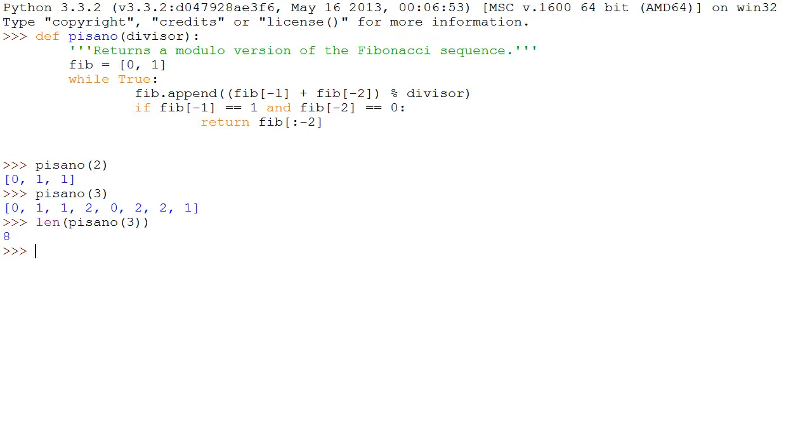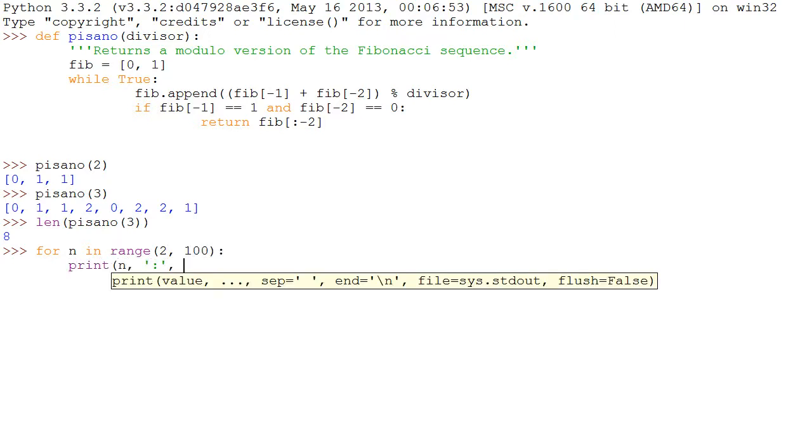We could do this all day but it would be faster to do a whole range of numbers at once. So for n in range 2 to 100, print n, a colon for separation, and len Pisano n.